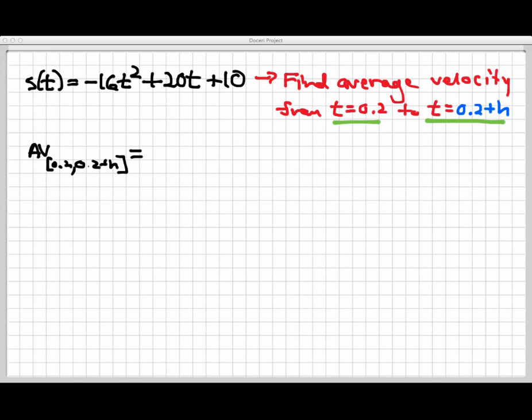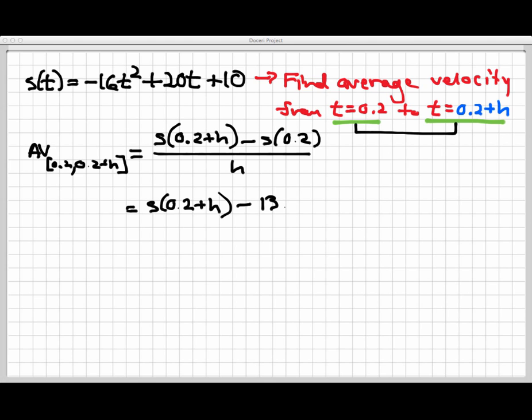Well, the average velocity from 0.2 to 0.2 plus h, if I just use my formula, that will be s of the ending time, which is 0.2 plus h. I'm going to subtract off s of 0.2 and then divide by the change in time, which is h in this case. Again, that's the ending time minus the starting time as my h value. Okay, so there are a few things I can do. There's at least one step that I can do right off the bat here that doesn't require a lot of work, other than copying down some stuff.